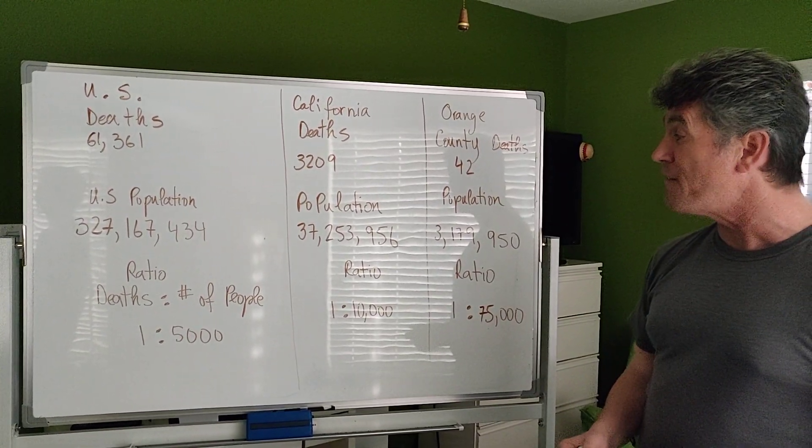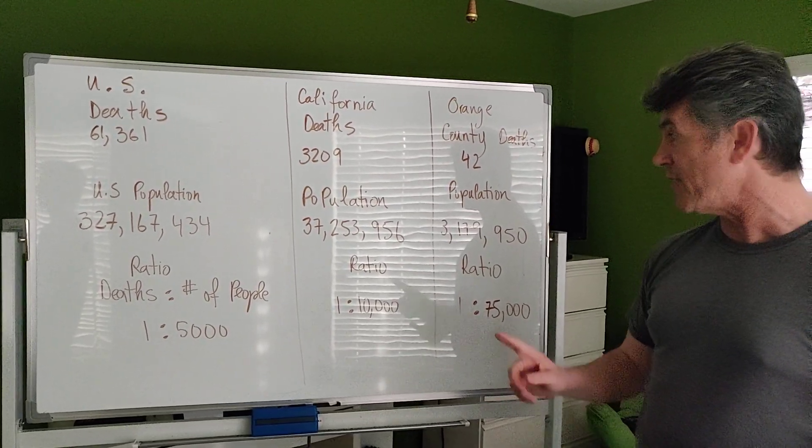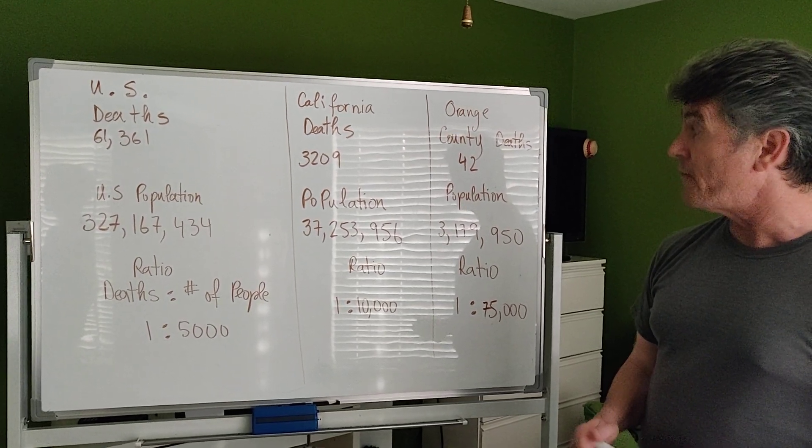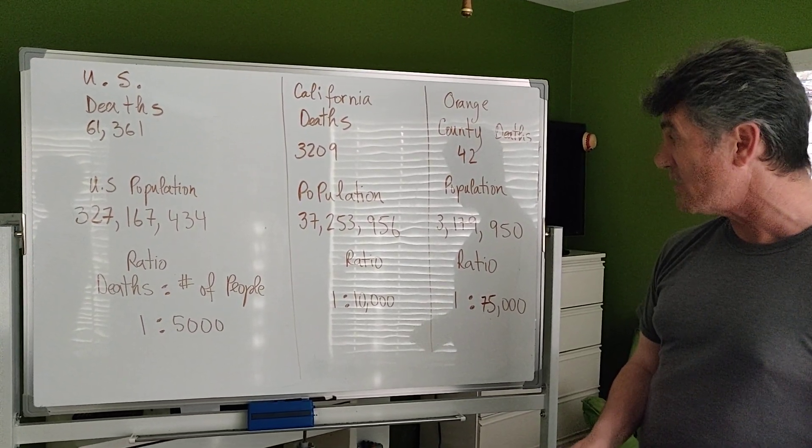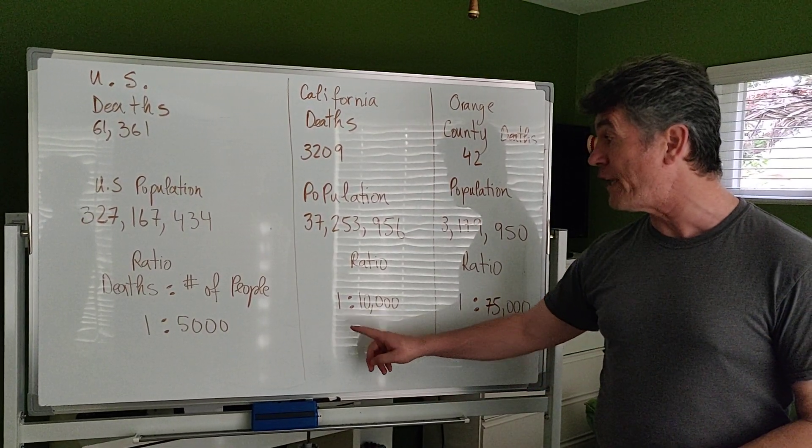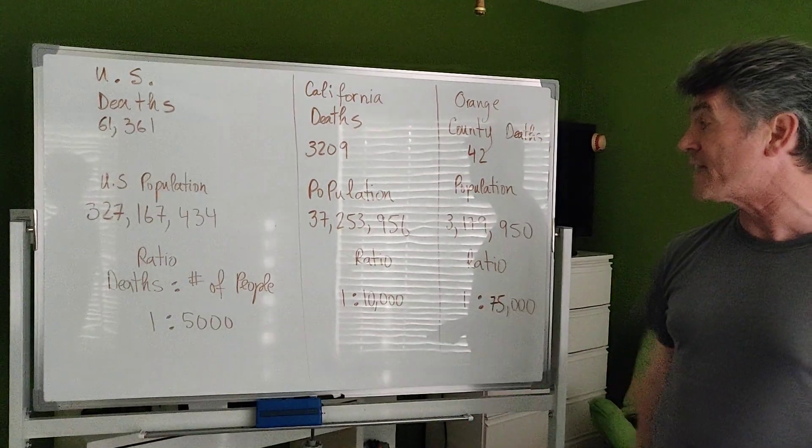So that means for every 10,000 people, there is one death. Think about this: you've been locked in your own house, you have had to close your business, lose your job. Take a look at the ratio of deaths to number of people. One death for every 10,000 people.